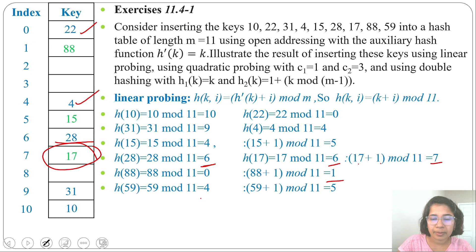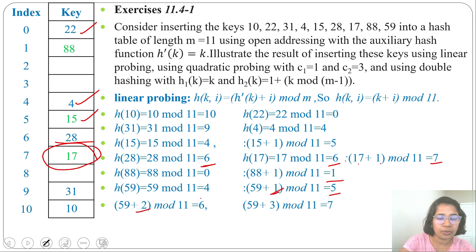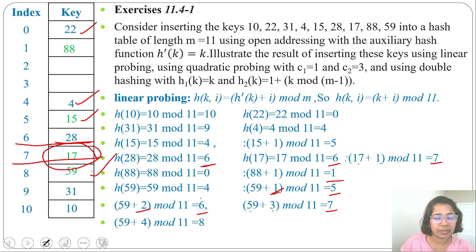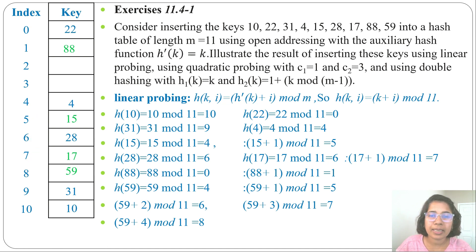Next, 59 divide 11 remainder is 4. Slot 4 is filled; 59 + 1 = 60 mod 11 = 5, also filled; 59 + 2 mod 11 = 6, also filled; 59 + 3 mod 11 = 7, also filled; 59 + 4 mod 11 = 8, which is empty, so we insert 59 at slot 8. For inserting key 59 we did 4 probes, checking indices 4, 5, 6, and 7 before finding slot 8.